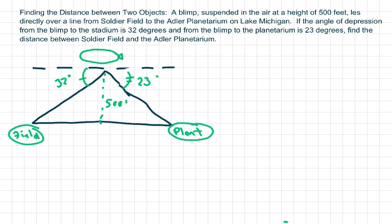Hi everyone. We're going to find the distance between two objects. So basically we have a blimp that's suspended in air by 500 feet right here and it's directly over the line from a field here. This is from Michigan and a planetarium.